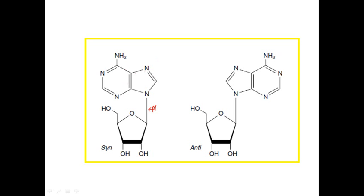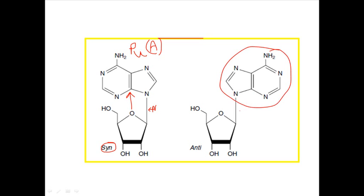In this picture we have a simple ribose sugar with the N-glycosidic linkage showing a purine — adenine in this case. There are two different orientations of how the purine can be attached to the sugar. In the syn orientation, both rings are placed just on top of the sugar ring, which will not be favored because it creates much more torsional strain. The anti orientation, where the two bulkier rings face outward rather than over the sugar, is favored because it has less torsional strain.